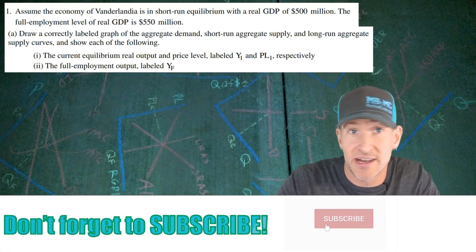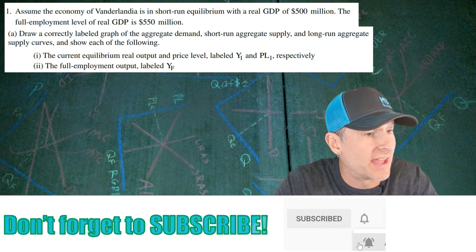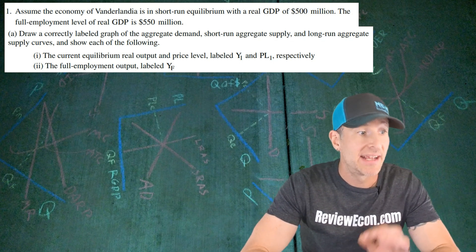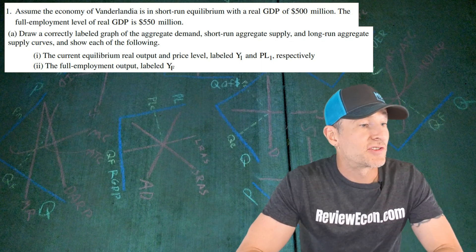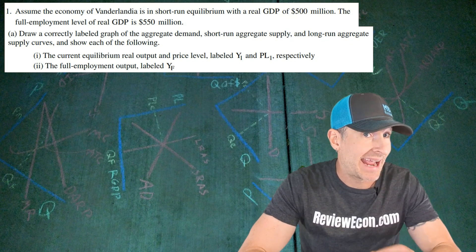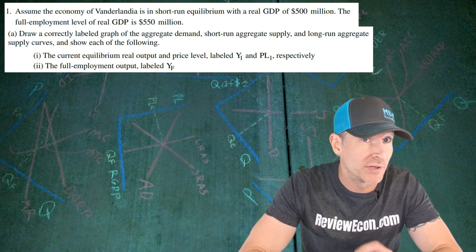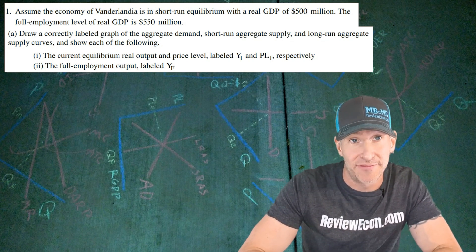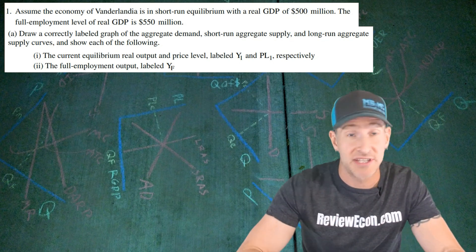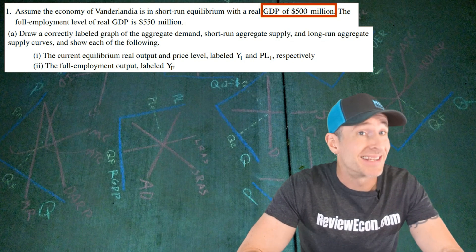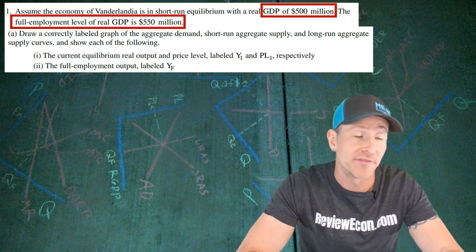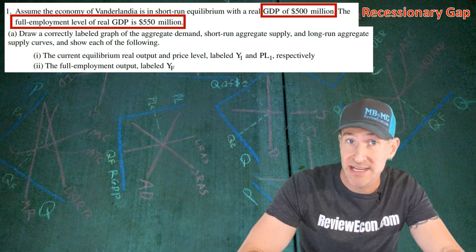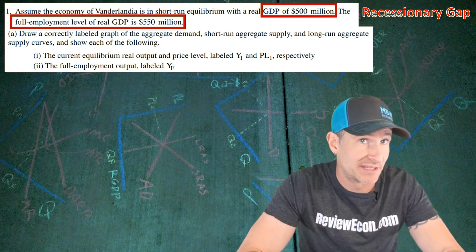This question starts off with the country of Vanderlandia. They are in short-run equilibrium with a real GDP of $500 million, and the full employment level of real GDP is $550 million. The current real GDP output is $500 million and the full employment level is $550 million. That means we have a recessionary gap because our current level of output is less than our full employment level of output.